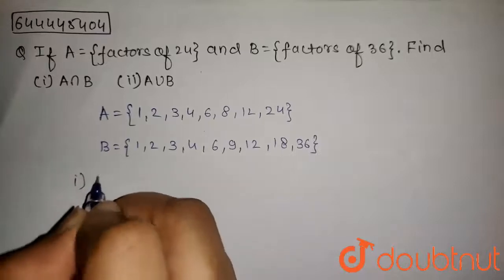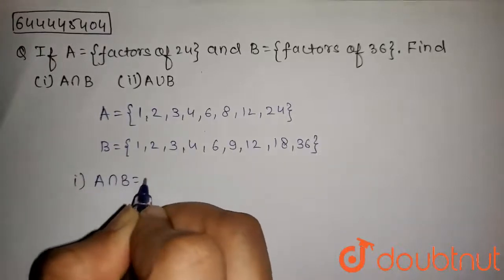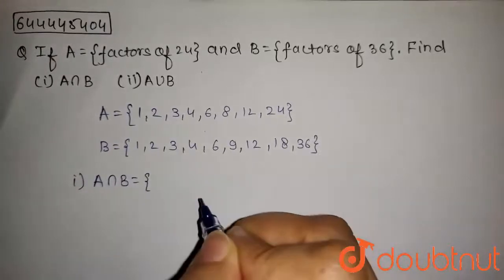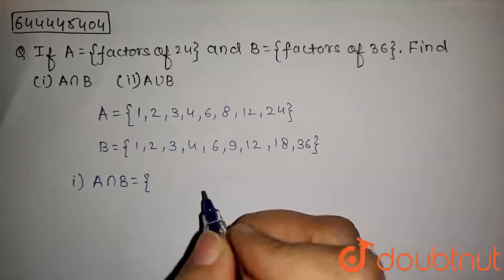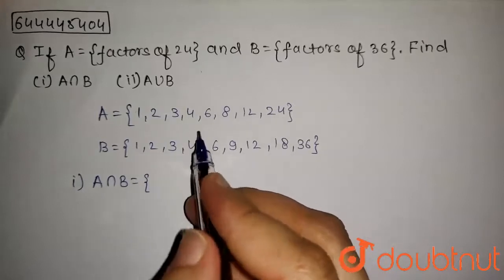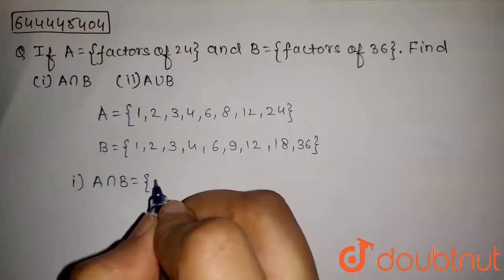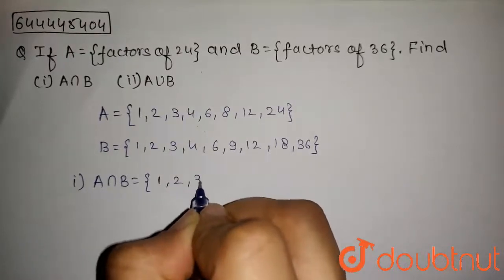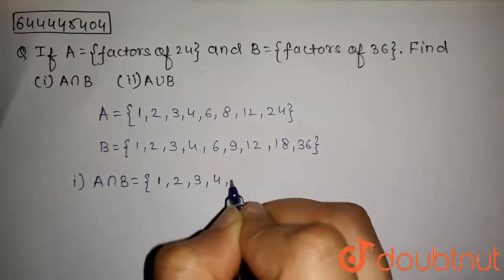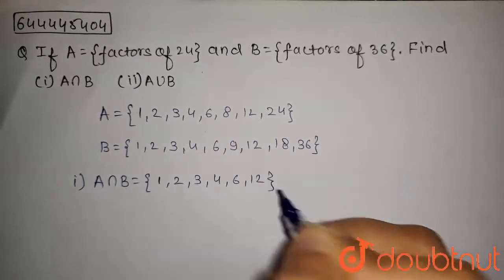We have to find first A intersection B. A intersection B will contain all the elements which are in A as well as in B. So A intersection B will contain 1, 2, 3, 4, 6 and 12.